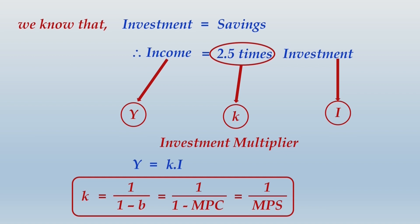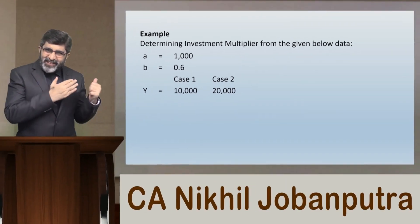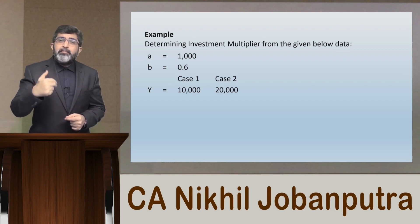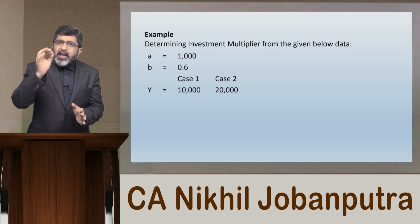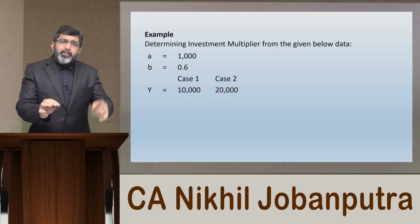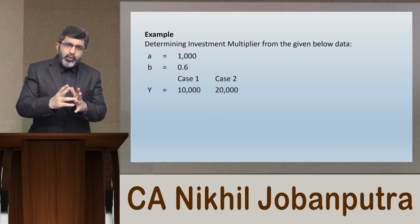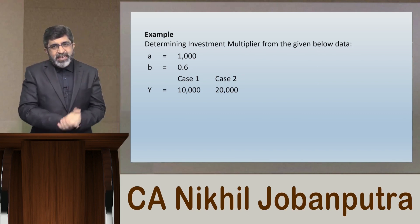Now let me show a straight shortcut method. Looking at the same example, we don't even need to compute consumption. Since b = MPC = 0.6 is already given, MPS = 1 − 0.6 = 0.4, and the inverse of 0.4 gives the investment multiplier of 2.5. When multiplied by investment, it gives the total income.